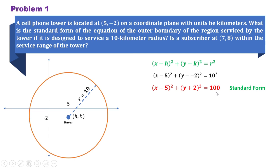To answer if a subscriber at (7, 8) is within the service range of the tower, we're going to use 7, 8 as point x, y. So we just need to substitute 7 to our x and 8 to y. So if the answer that we get here would be greater than 100, therefore the subscriber is outside the service range. If it's less than or equal to 100, the subscriber is within the service range.